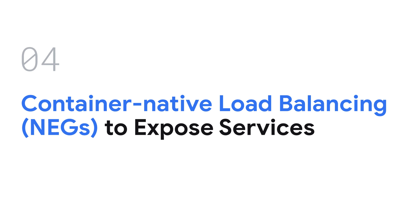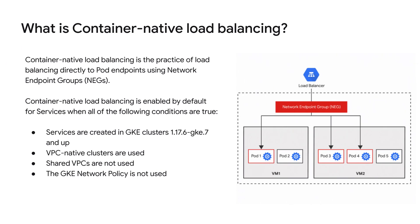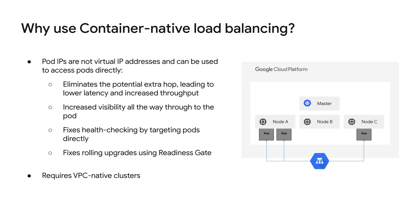Let's briefly discuss container-native load balancers. Container-native load balancing load balances directly to pod endpoints in GKE using network endpoint groups, which let Compute Engine load balancers communicate directly with pods. Traffic is then distributed directly to the pod IPs, as opposed to traversing the virtual machine IPs and kube proxy networking. Currently, container-native load balancing is only supported on layer 7 load balancers and is enabled by default. It must be used when exposing services using HTTPS externally. Deploying ingress with network endpoint groups is highly recommended, as container-native load balancing allows for fewer network hops, lower latency, and more precise traffic distribution. It also increases visibility and enables the use of features such as Cloud CDN and Cloud Armor, and fixes rolling upgrades.